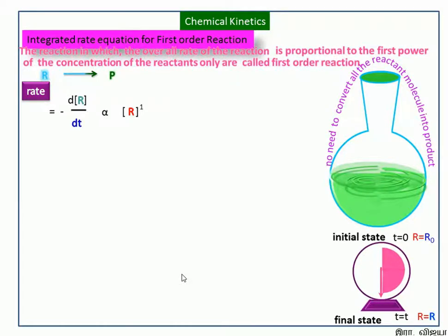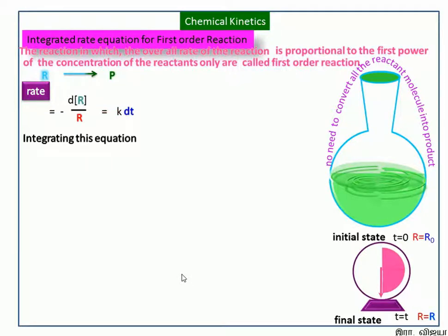In between the reaction, we can find the rate of reaction using the initial and final state values of time and concentration. Now we see the mathematical form. We remove the proportionality by introducing the rate constant k, then we bring similar terms to the same side, and next we integrate this equation.